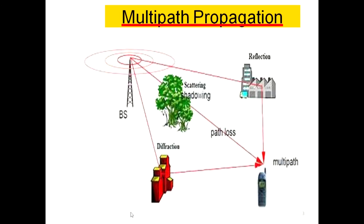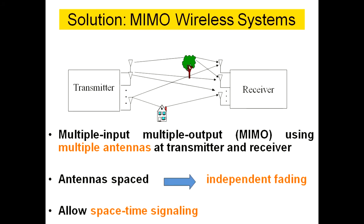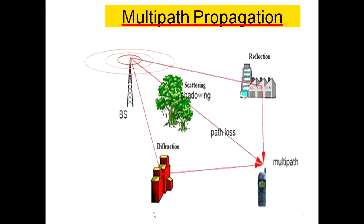Instead of having a single antenna, we replicate it with more antennas that are spaced sufficiently to reduce the fading effect. That spacing represents space-time signaling.